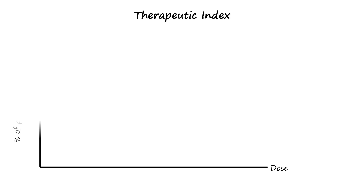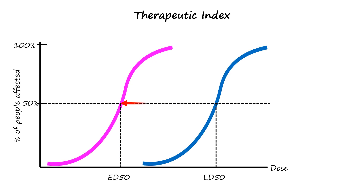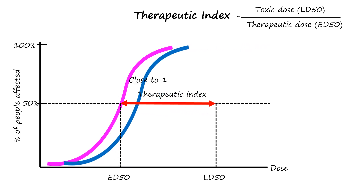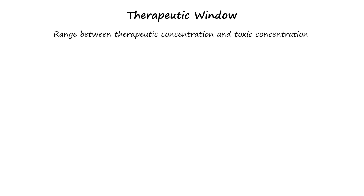ED50 and LD50 are used to calculate the therapeutic index, which is the quantitative difference between the therapeutic effect and the lethal effect. It is defined as the ratio between the toxic or lethal dose and the effective dose of a drug. A drug with a therapeutic index close to one has a higher danger of toxicity, meaning the dose that causes toxicity and the therapeutic effect have minimal difference. We also have another concept called the therapeutic range or window, which refers to the concentration range of a drug in the blood that produces the desired therapeutic effect without causing toxicity.